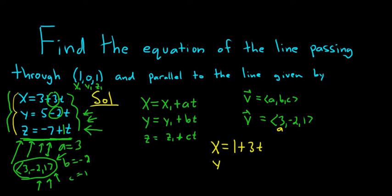And then y is, well, y₁ is 0, so I won't write it, and then b is -2, so just negative 2t. And then z is, well, z₁ is 1, so it's 1. And then c is 1, so it's just going to be plus t.